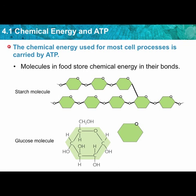Looking closer at the glucose molecule, we see it's a six-carbon chain with different end pieces — OH groups and a CH₂OH on the end. Basically it's a chain of carbons, and when you chain them together you get starch or cellulose, depending on how they're chained together.